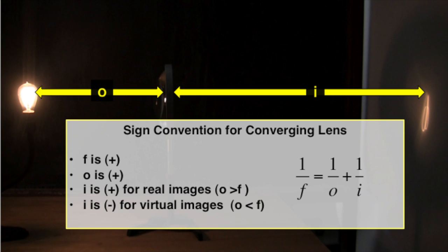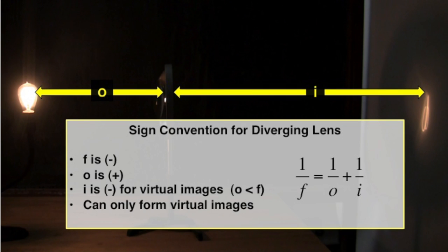When using this formula, be sure to use the correct sign conventions. For converging lenses, the focal length and object distance are positive, and I can be positive or negative depending on if the image is real or virtual.